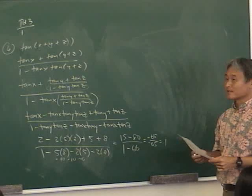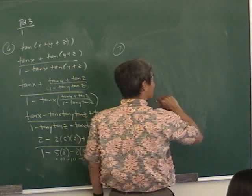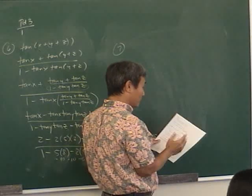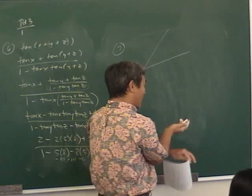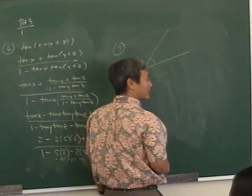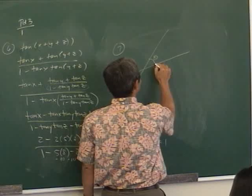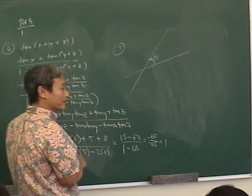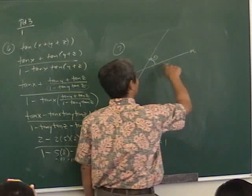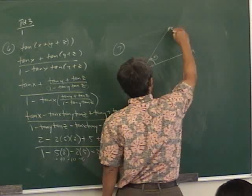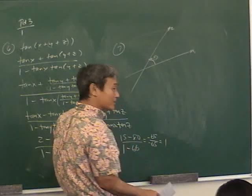Number 7 — anytime you want to measure an angle in the Cartesian plane between two lines, this is the formula you use. It's super important. If two lines intersect in the Cartesian plane and you want to compute angle θ measured counterclockwise: M1 is the slope of the initial side of the angle, M2 is the slope of the terminal side. Then just plug into the formula: tangent θ equals (M2 − M1) over (1 + M2·M1).